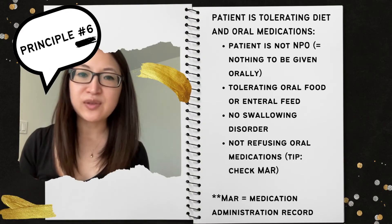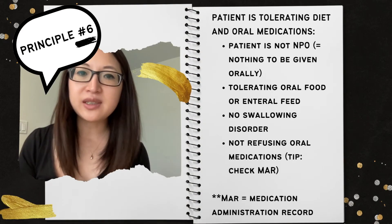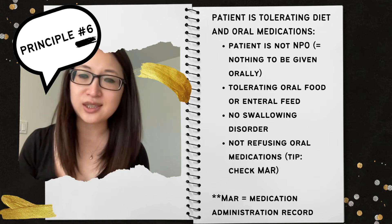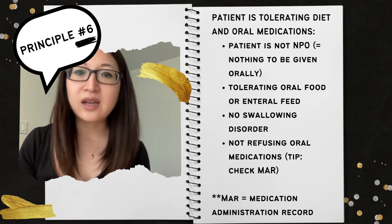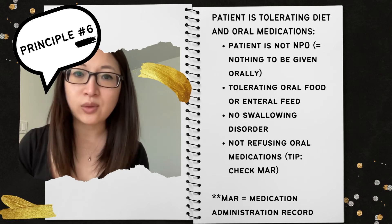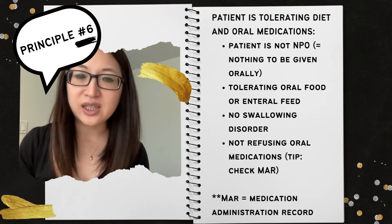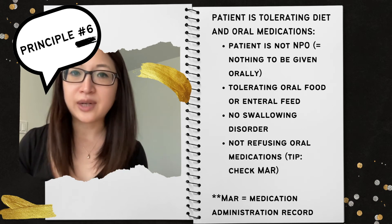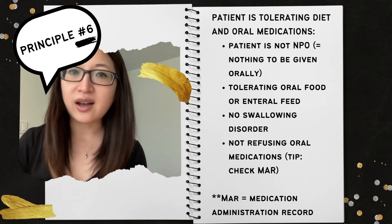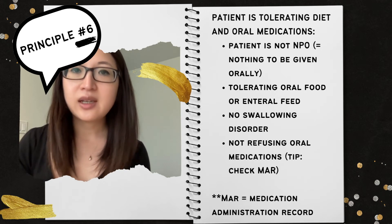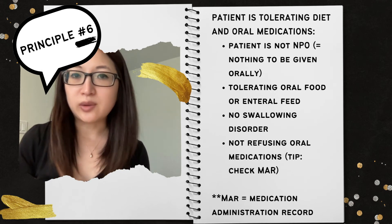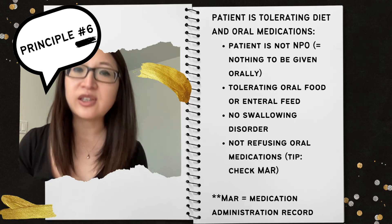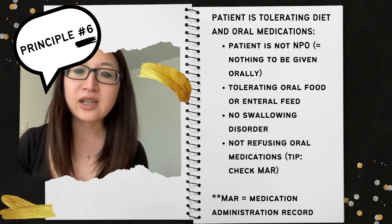The sixth principle is very similar to the fifth. Here you're reviewing whether the patient is able to tolerate their oral medications. First, check their chart to make sure they're not NPO — meaning nothing to be given by mouth. If they're already on oral feeds or an oral diet, check with nursing and dietician colleagues to ensure they're tolerating feeds okay and there is no high gastric residual. Make sure they're not vomiting, there are no swallowing disorders preventing them from swallowing oral pills, and check their MAR to see if they are refusing their oral medications.